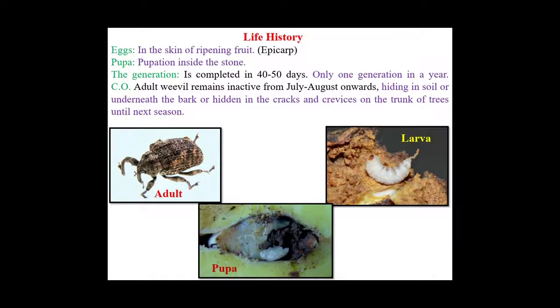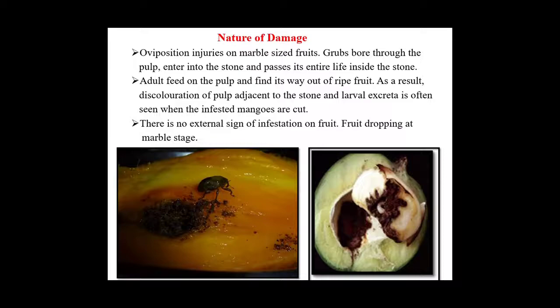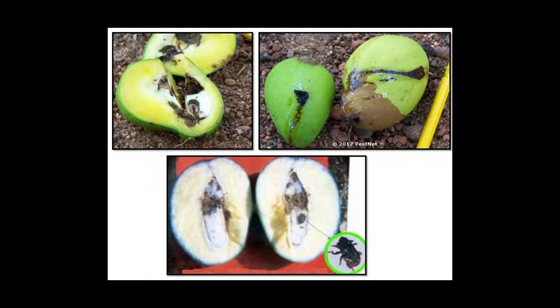Nature of damage by stone weevil: oviposition causes injuries on marble-sized fruits. Grubs bore through the pulp and enter the stone, passing their entire lives inside it. Adults feed on the pulp and find their way out of the ripe fruit. Discoloration of pulp adjacent to the stone and larval excreta is often seen when infested mangoes are cut. There is no external sign of infestation, and fruit drops at the marble stage.